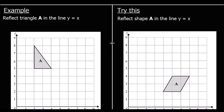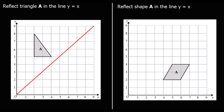And now we've got a reflection in the line y equals x. The line y equals x goes through (1,1), (2,2), (3,3), (4,4), (5,5), and so on. Again, we take each corner individually, going the shortest distance to the mirror line diagonally. This red point was half away, so we go half away on the other side.